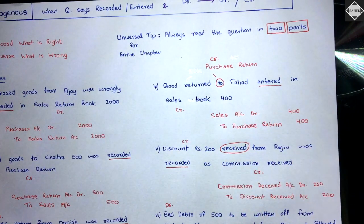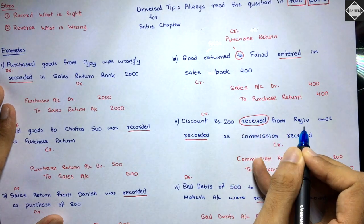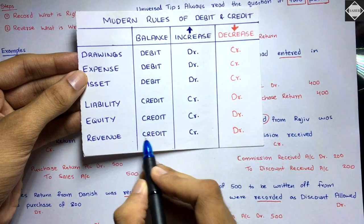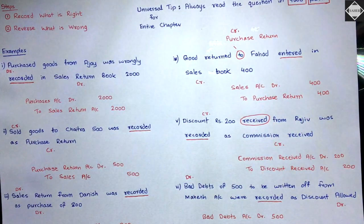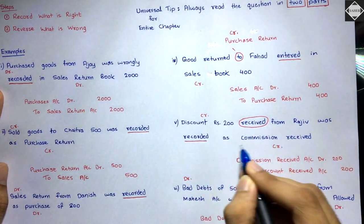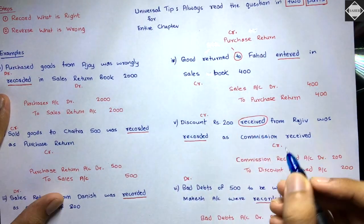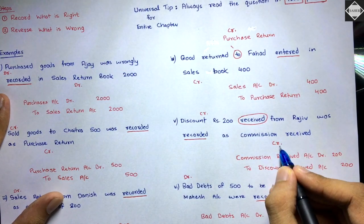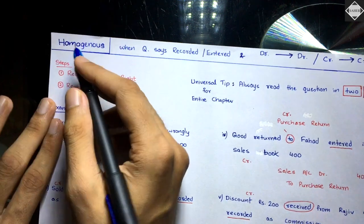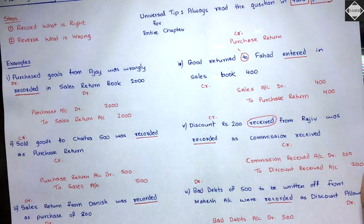Fifth homogeneous transaction: 'Discount ₹200 received from Rajiv was recorded as commission received.' Discount received is income — credit balance. Commission received is also income — credit balance. Credit has gone into credit — homogeneous. Record what is right — discount received is right; it has credit balance so credit it: to discount received account ₹200. Reverse what is wrong — commission received is wrong; it has credit balance so debit to reverse: commission received account debit ₹200.